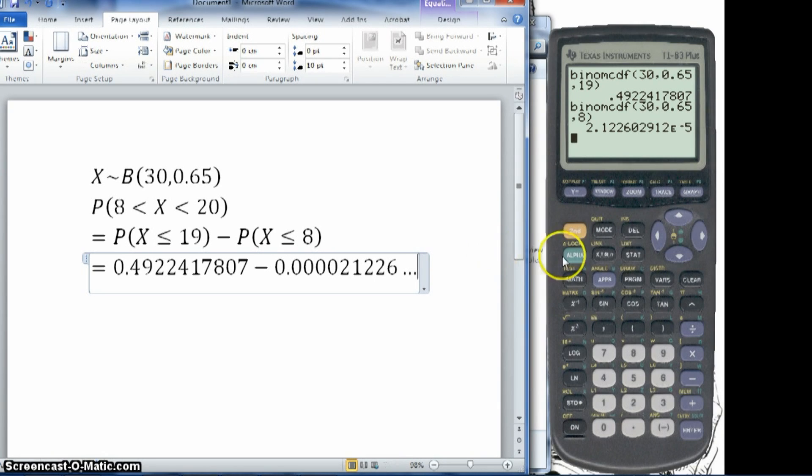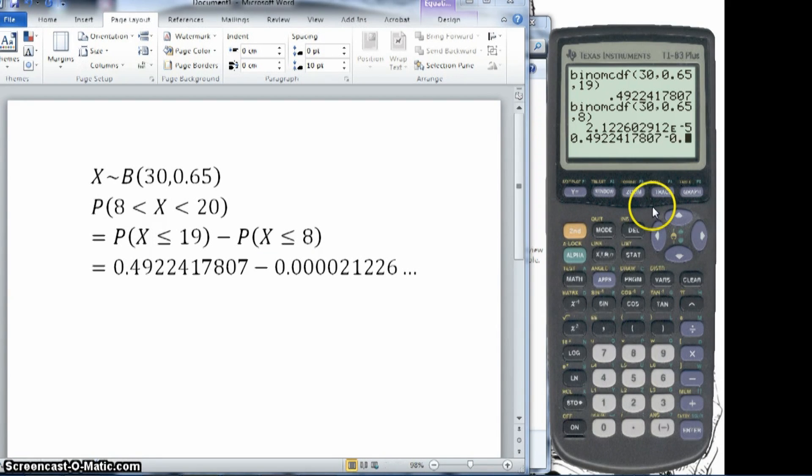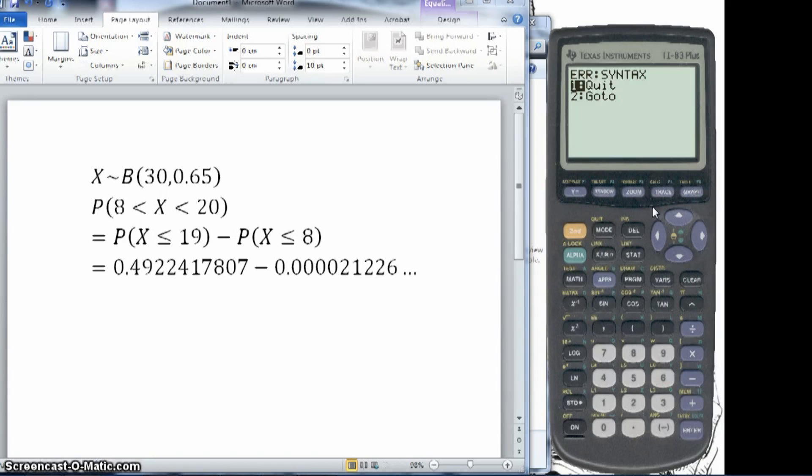So when doing this, you could do this all in one go on your calculator. As I said, I'm going to do it the old-fashioned way. So go on to the calculator again. So we're going to do 0.4922417807. Take away 0.000000212226. And I've gone wrong because I used a minus sign, I think. So take away. Press enter. And we get our answer of 0.49222. So that would be my answer there.